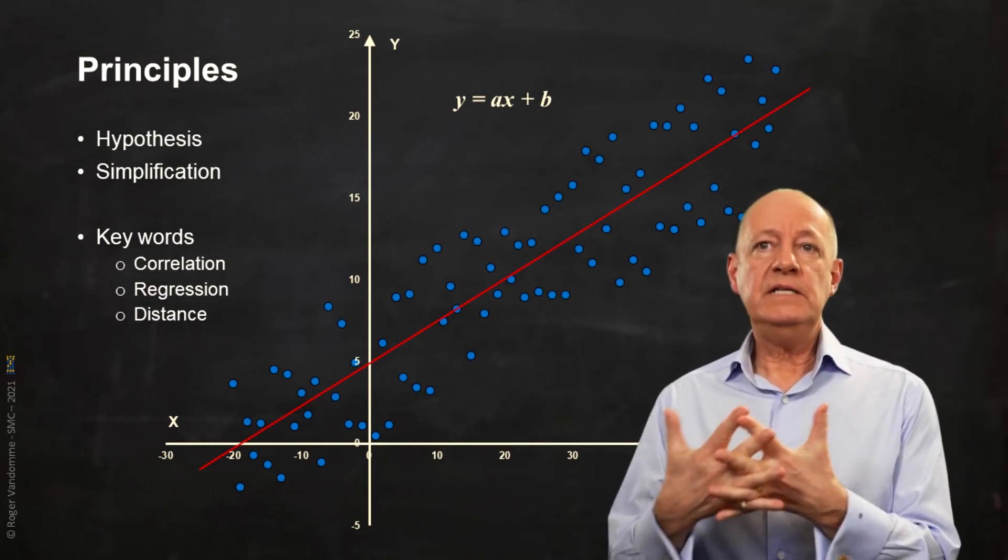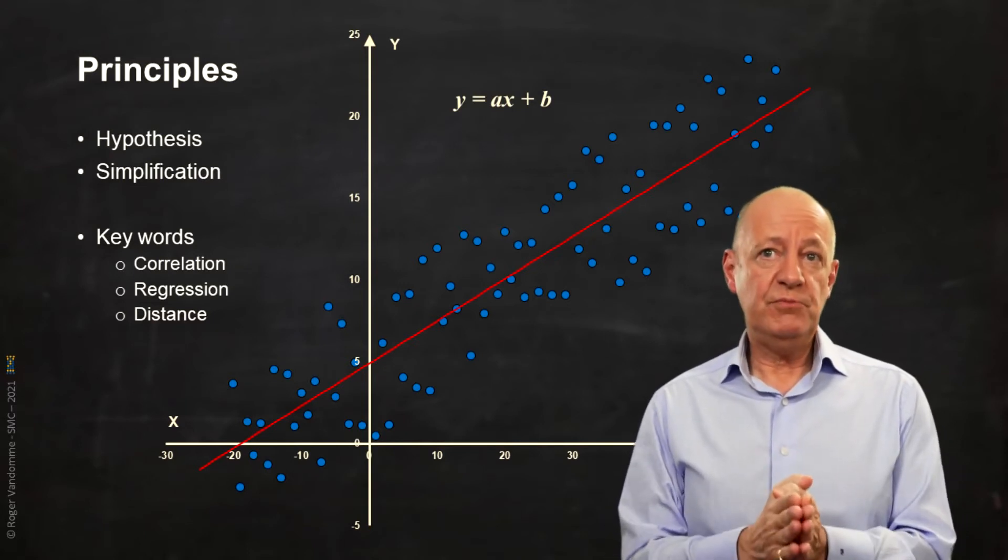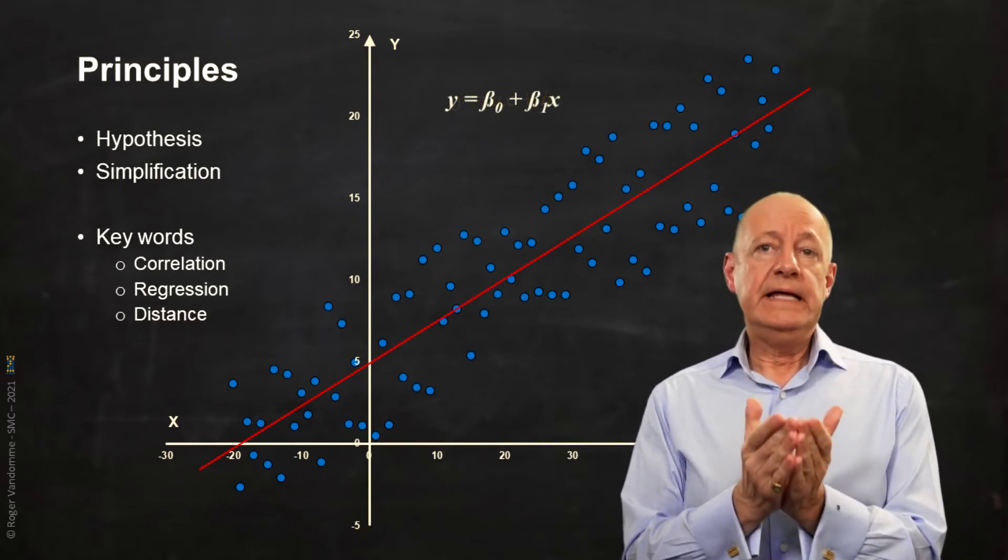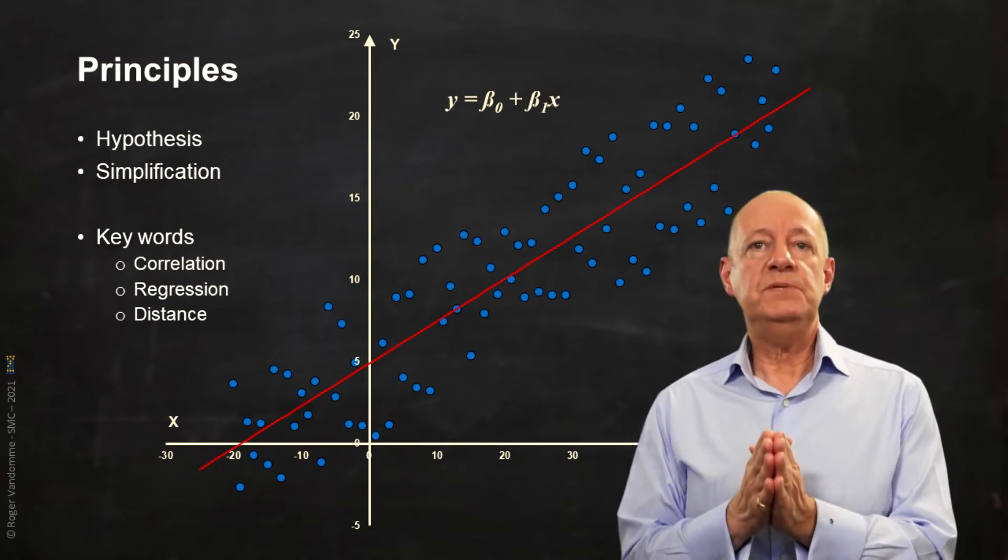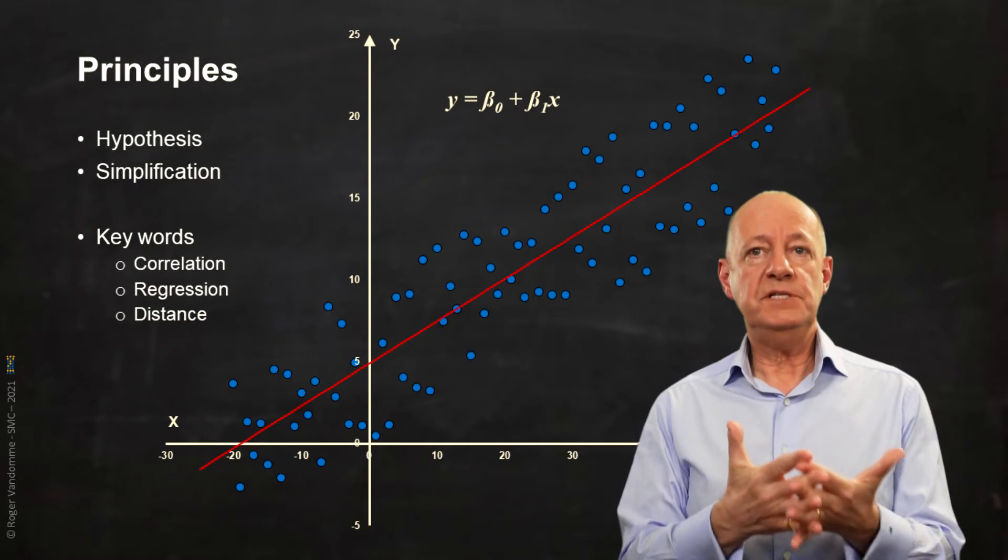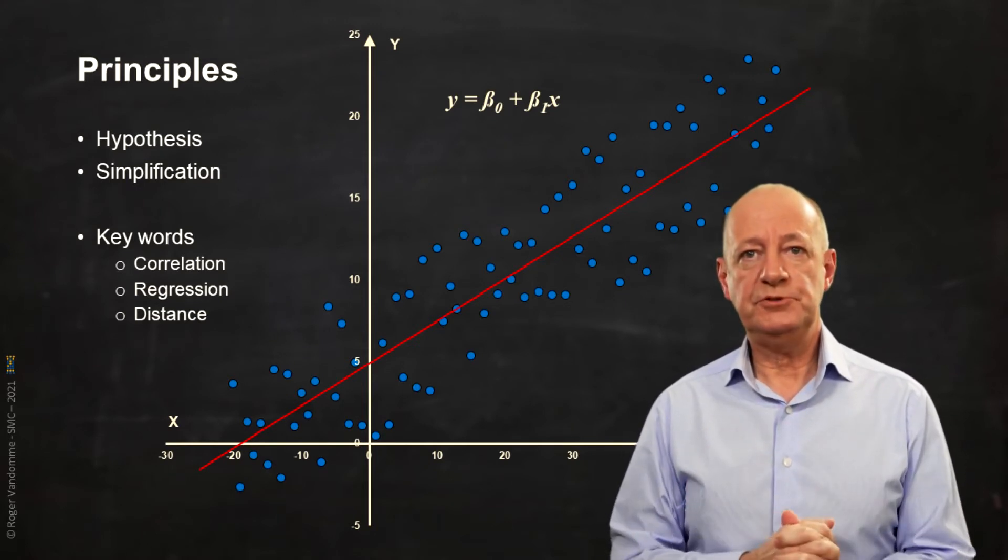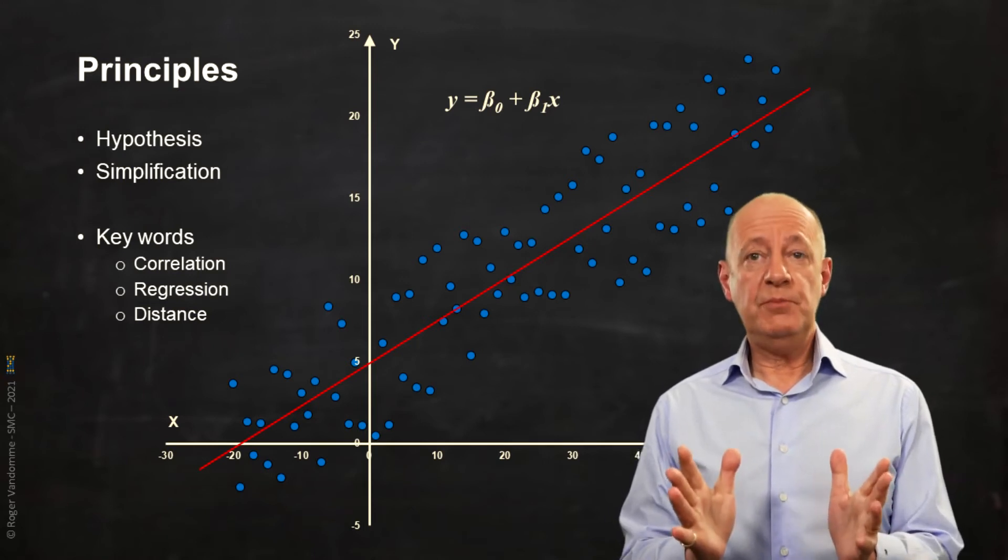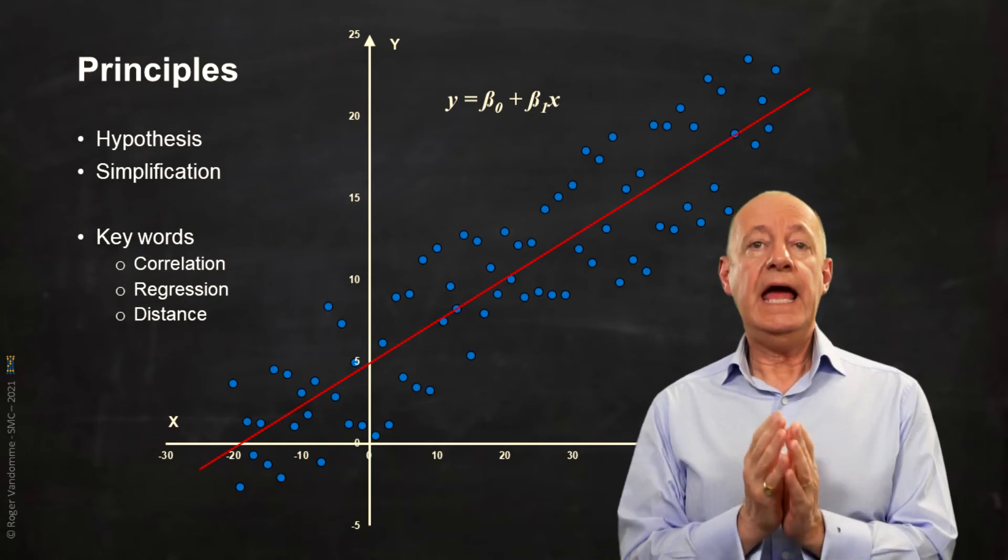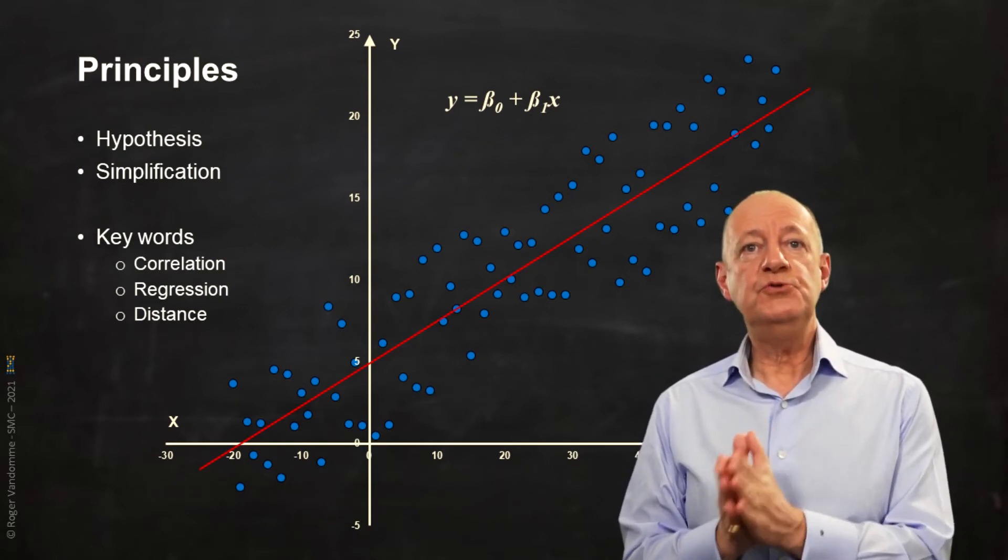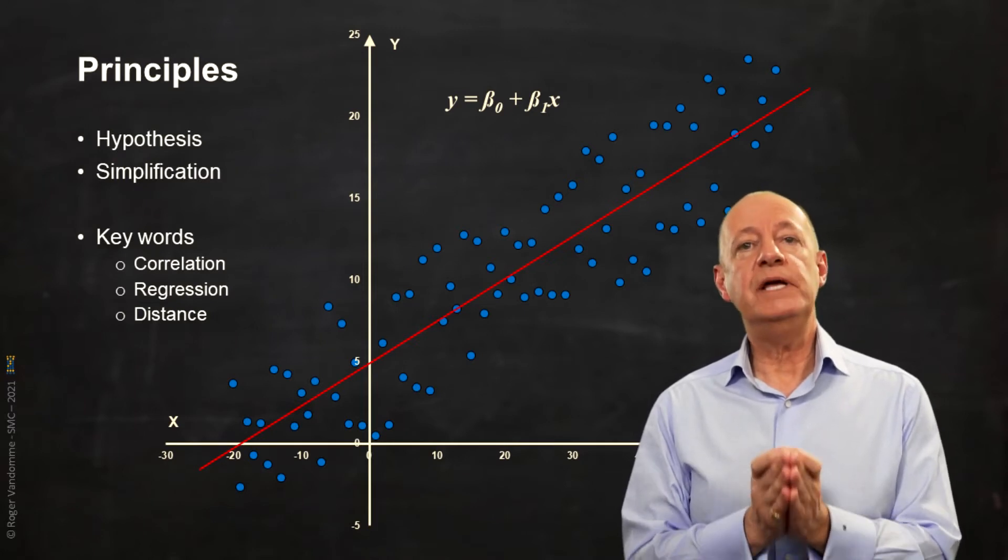The formula of our line y equals ax plus b becomes the formula of our model that we are going to write y equals beta zero plus beta one x where beta zero and beta one are called the model parameters. To sum up, a model is a simplification of reality and predictive models use correlations and distance measurements to calculate probabilities.